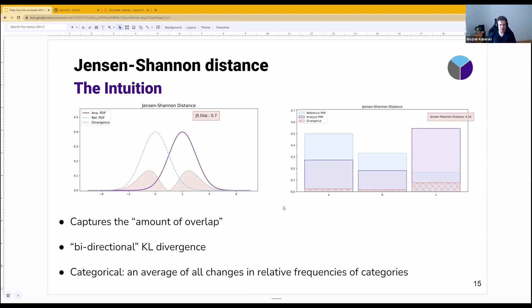It works as a bidirectional KL divergence. As you potentially know, KL divergence is asymmetric. So if you compare distribution A to distribution B, and then you compare distribution B to distribution A, you might get a different number.